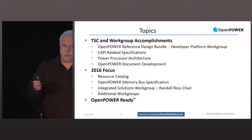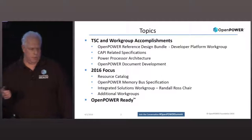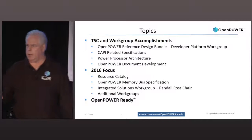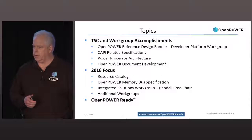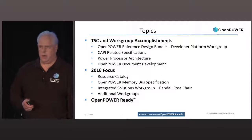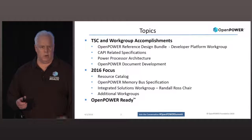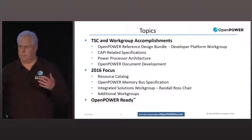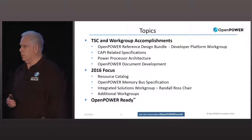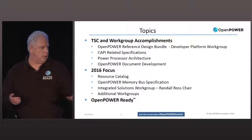To start with, we're going to talk about the TSC itself and the work group accomplishments over the last year. Those are going to be in the form of a reference bundle, some CAPI-related specifications, a number of things around the power processor architecture itself, and then something around how we're going to publish documents for the community's consumption. Then we'll talk a little bit about 2016, and then I'll talk about OpenPowerReady.